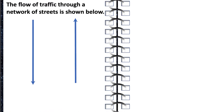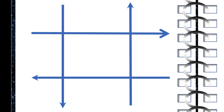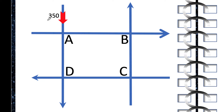Let's say we have this situation. The flow of traffic through a network of streets is shown below. You have these four streets that are all one-way streets, and there are four intersections corresponding to the nodes of the network. From the north side of this road going to intersection A, the flow of traffic is 350 cars per hour. And coming from the west, the flow of traffic to intersection A is 125 cars per hour. Those cars can proceed to intersection B or intersection D, at the rate of x1 going to intersection B and x4 going to intersection D.